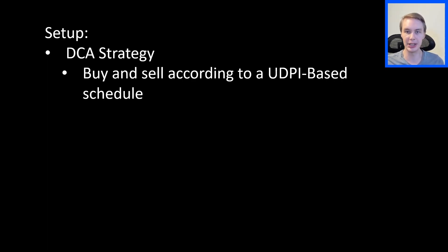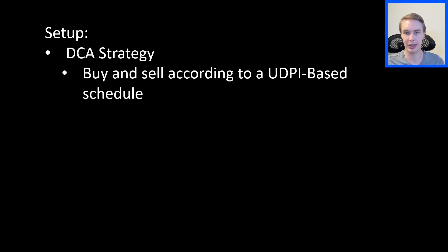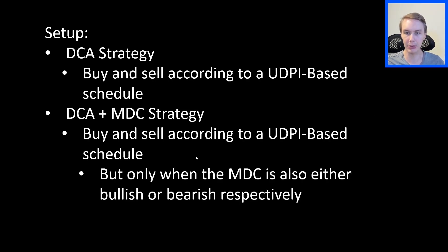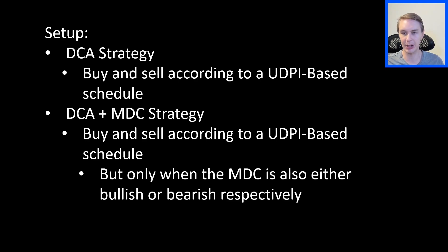We're going to compare two different strategies. The first is just a DCA strategy based on the UDPI — you're dynamically buying and selling Bitcoin based on a UDPI-based schedule. Depending on the level of the UDPI, you're either buying or selling varying amounts of Bitcoin at that given level. Then we'll also look at the DCA plus MDC strategy, which combines the UDPI-based DCA schedule with the MDC filter.